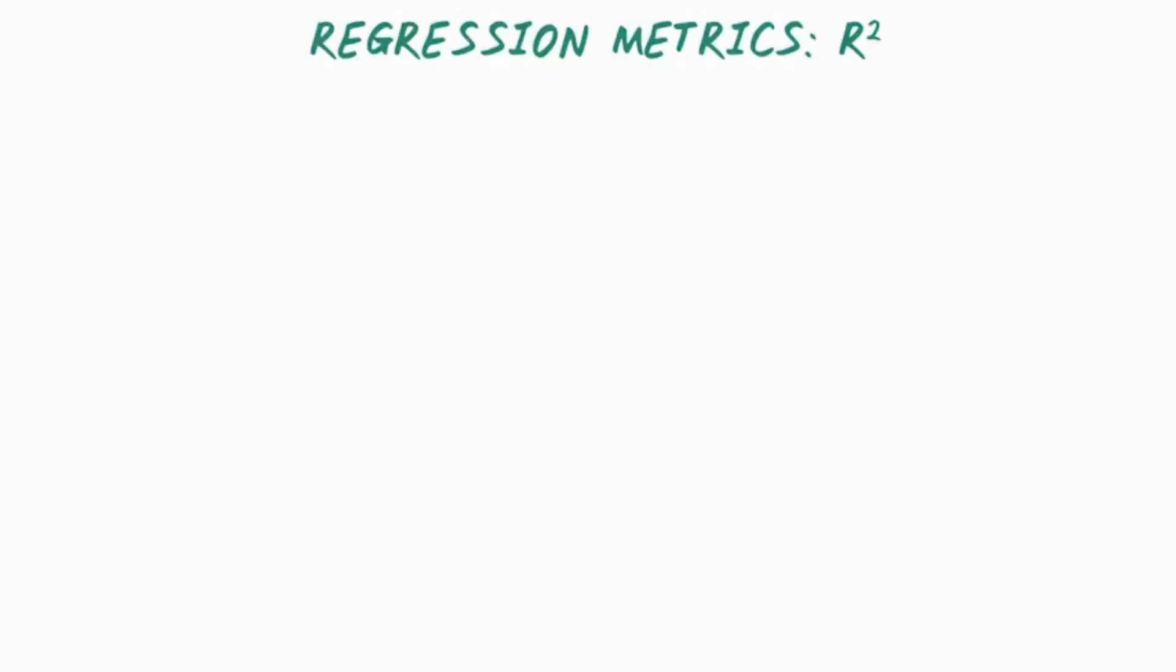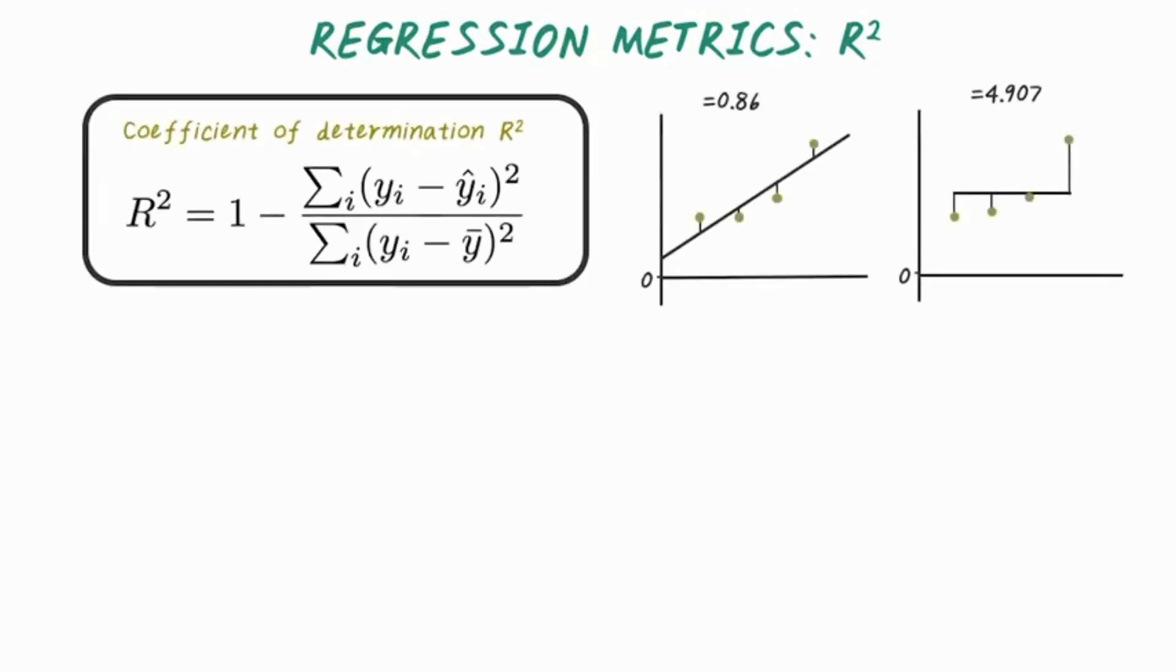Both mean absolute error and mean squared error are popular metrics, but they're not bounded in a fixed range, so it's not possible to compare across datasets. Next, we'll introduce another regression metric called R squared, which has a fixed maximum score of one.